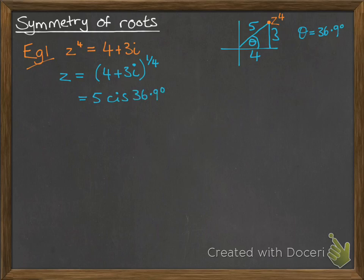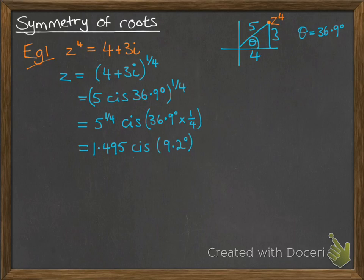So if we turn that into polar form, that gives us 5 cis 36.9 that we're going to do to the power of a quarter. De Moivre's Theorem tells us that we can do the modulus to the power of a quarter and then times the argument by a quarter. And that gives us our root of what z to the power of 4 was. So z would have to be 1.495 cis 9.2.